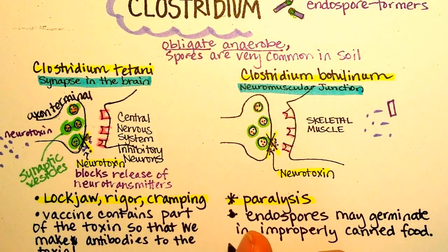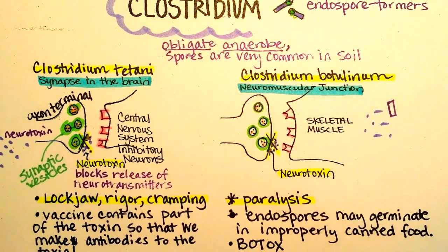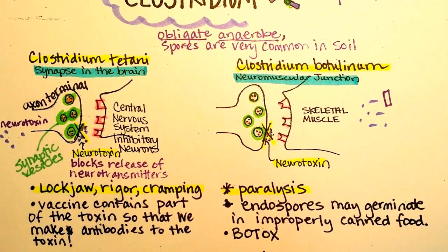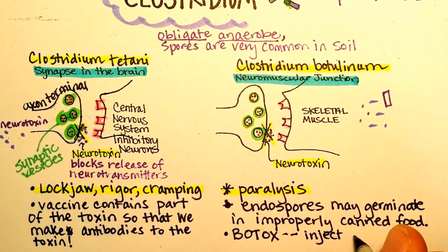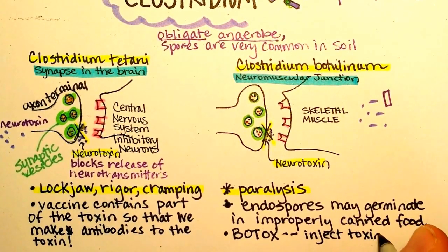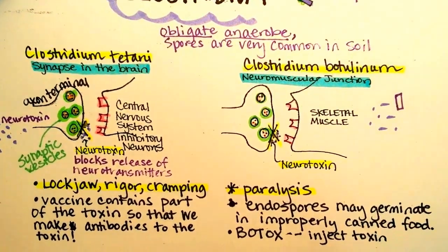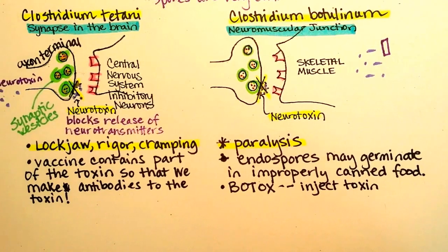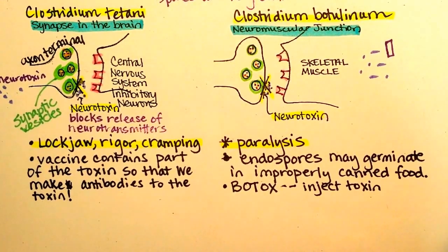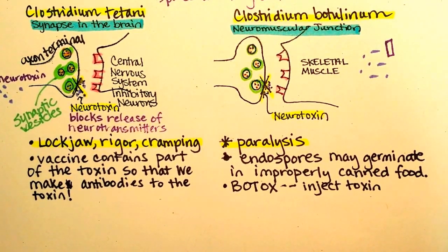Another interesting tidbit is Botox. Botox is an injection that people might get to lessen their wrinkles. What they're actually doing is injecting this toxin into their skin — it's not going systemically and won't cause paralysis, but it will paralyze the facial muscles that can cause wrinkles, like smile lines and things like that.